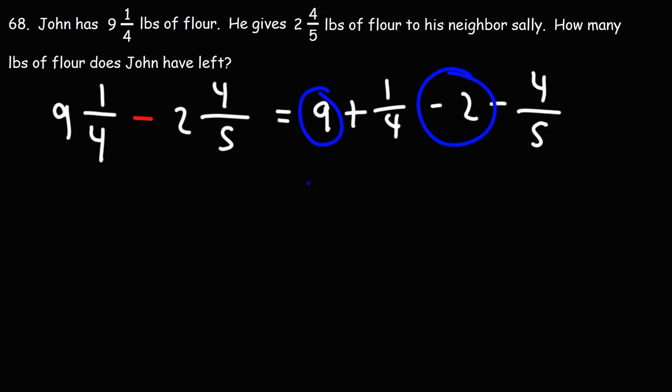So we have nine plus negative two, or nine minus two, which in both cases will be seven, and then plus one over four minus four over five. Let's get common denominators. I'm going to multiply the first fraction using the denominator of the second, so we'll multiply one over four by five over five. And the second fraction, we'll multiply it using the denominator of the first fraction, so we'll multiply it by four over four.